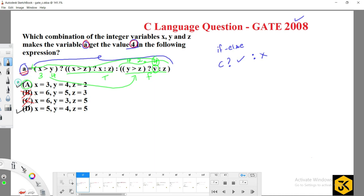Let's check option D. For x greater than y, if the condition is true, the positive condition executes. In the positive block, we have another nested ternary operator.